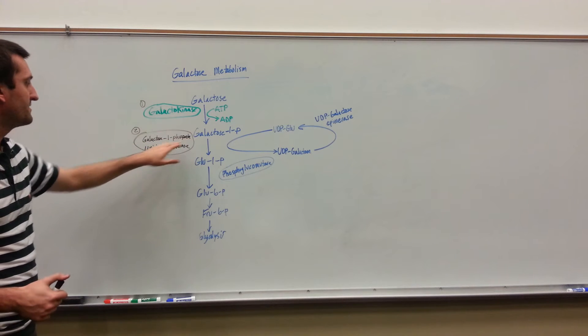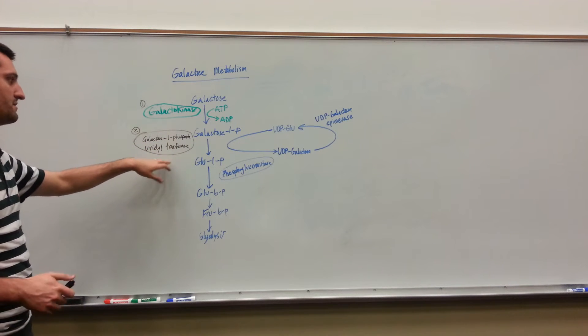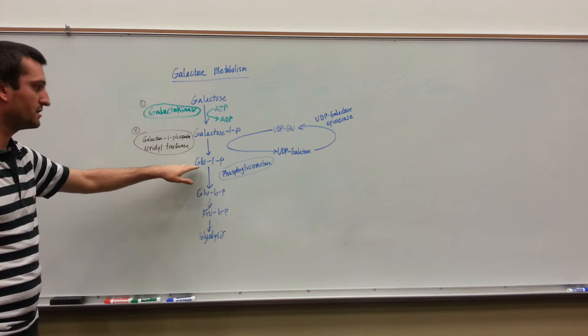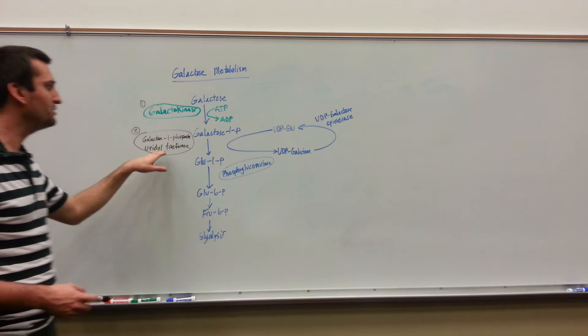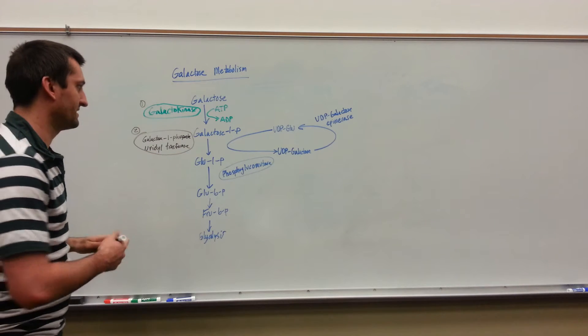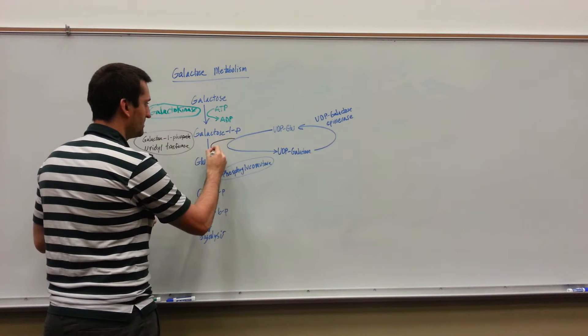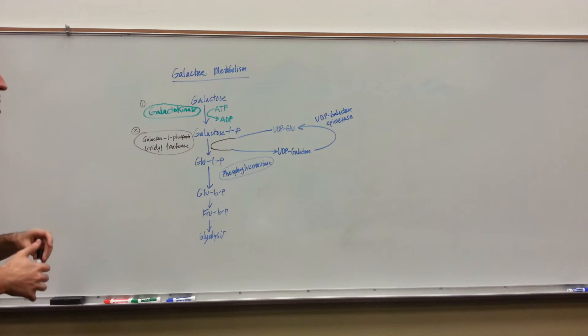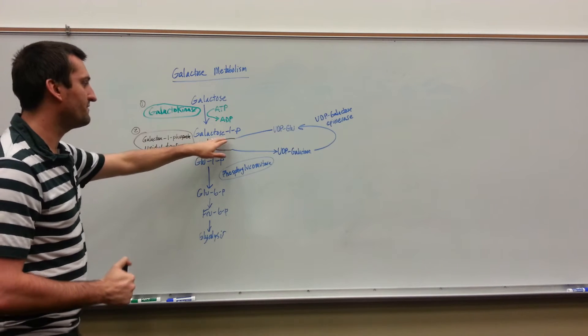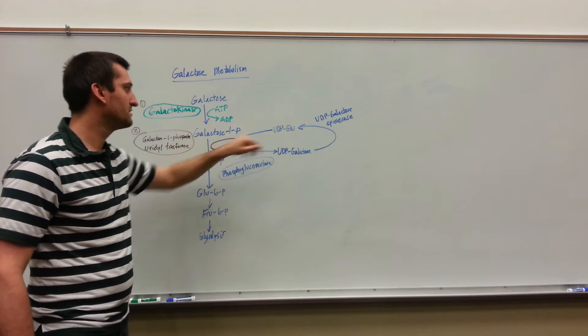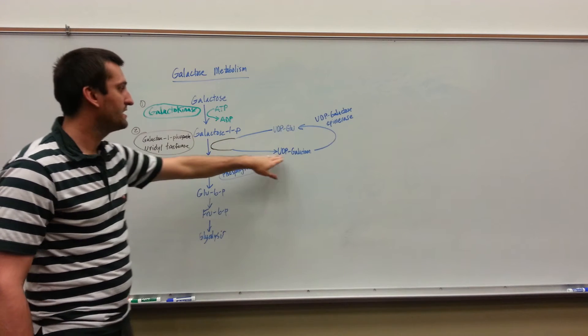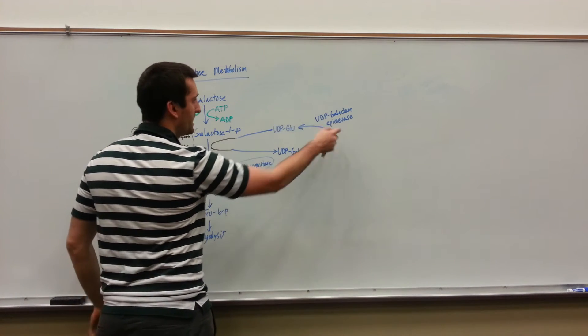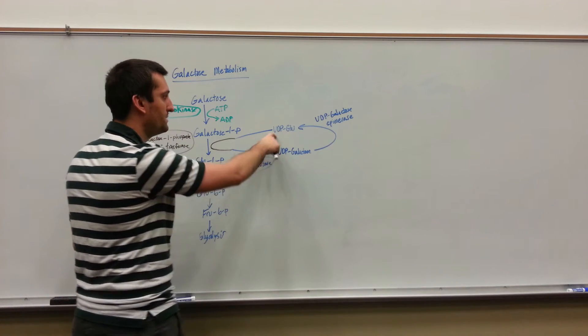This enzyme, the galactose 1-phosphate uridyl transferase, is going to simply convert a galactose 1-phosphate into a glucose 1-phosphate. To do this, we're going to need a helper. We're going to use galactose 1-phosphate plus a UDP glucose. That'll spit out a glucose 1-phosphate and a UDP galactose. This UDP galactose will get epimerized into a UDP glucose again.